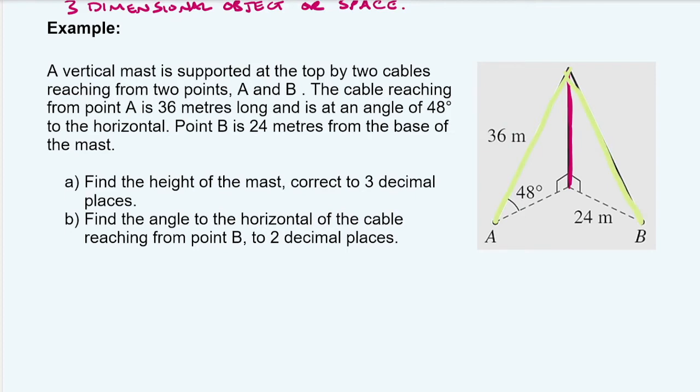So we're supported by the two cables down to points A and B. The cable reaching point A is 36 meters. So that's our hypotenuse. And then it's at an angle of 48 degrees. Point B is 24 meters from the base of the mast. So we have all the information we need in that diagram and in that question to find the answers for question A and question B.